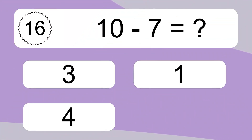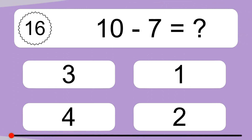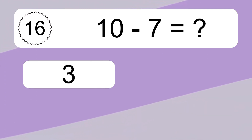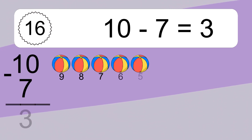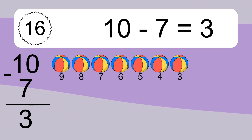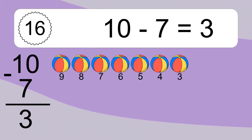10 minus 7 equals what? 10 minus 7 equals 3. Let's count it: 9, 8, 7, 6, 5, 4, 3.